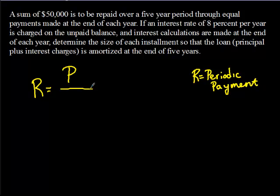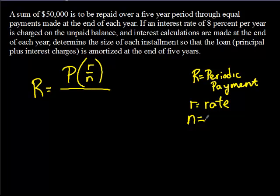Up in the numerator, we have the principal times the quantity of lowercase r — which is our rate — divided by n, where n is the number of periods. So if we're making monthly payments, n will be 12; quarterly payments, n will be 4; payments once per year, n will be 1.